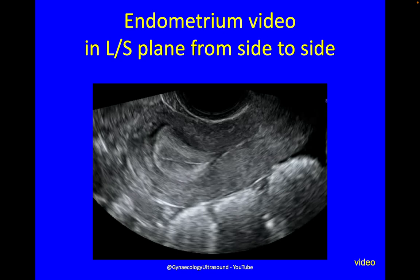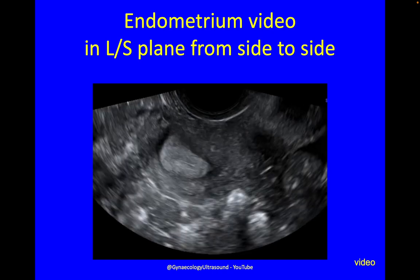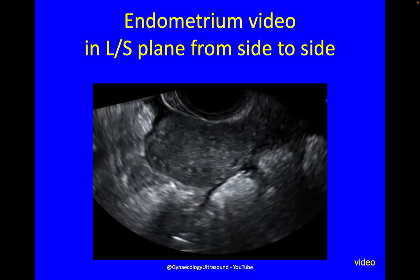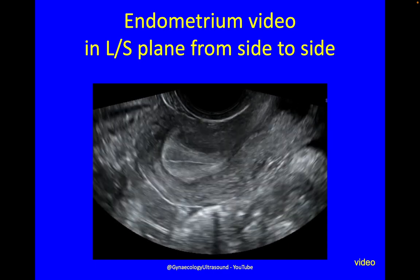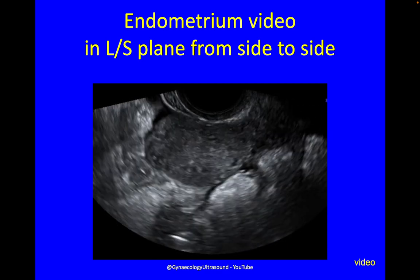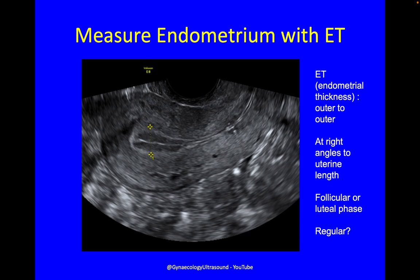Having done the uterus, we're now going to look at the endometrium in the longitudinal plane from side to side. We've already looked at the myometrium, so endometrium now — going from side to side, really examining the whole cavity, looking to make sure that it's regular, that the uterine shape is normal, that there are no polyps, malignancy, fluid, or adhesions. You can measure the endometrium with an endometrial thickness measurement from outer to outer, near the fundus or wherever it is thicker. You also comment on what phase of the menstrual cycle the endometrium's in — whether it's post-menstrual, follicular or luteal — and if you can see any abnormalities.